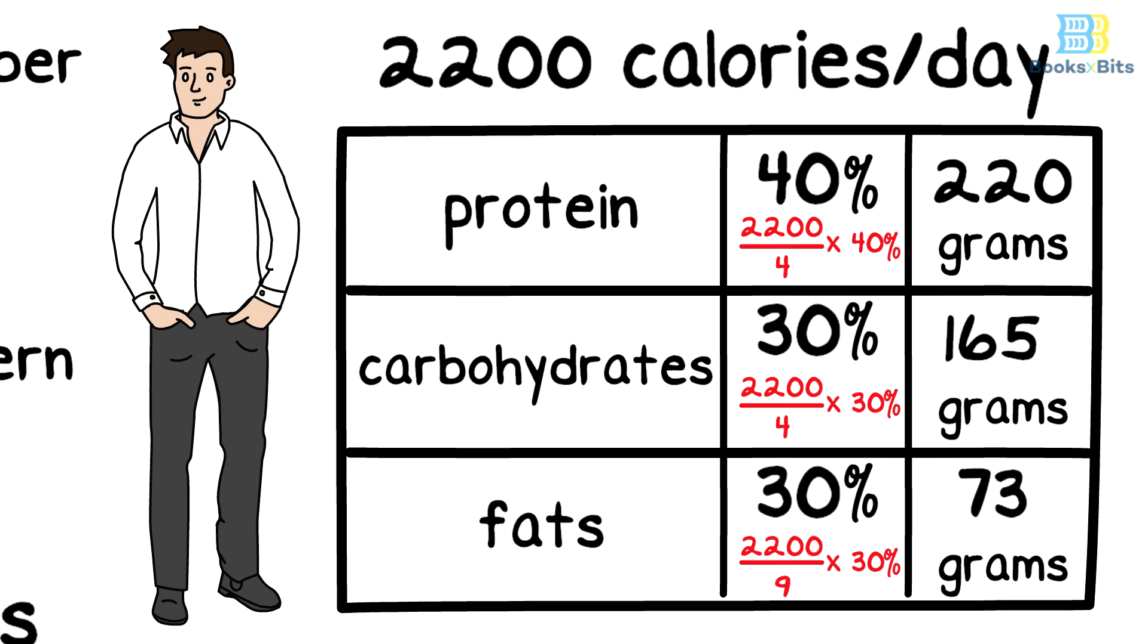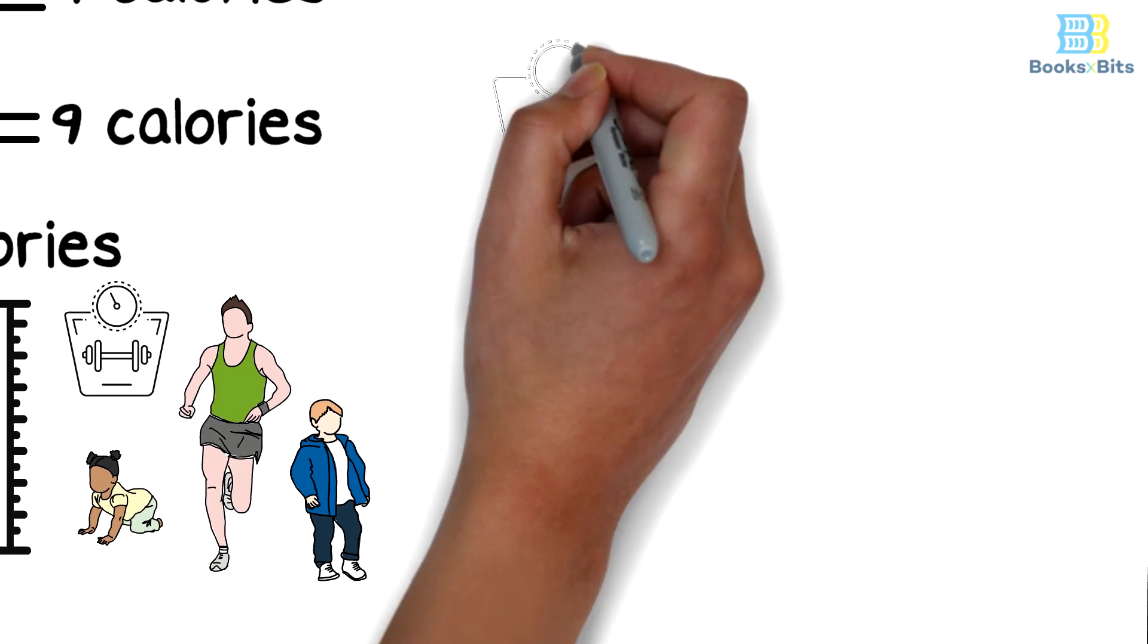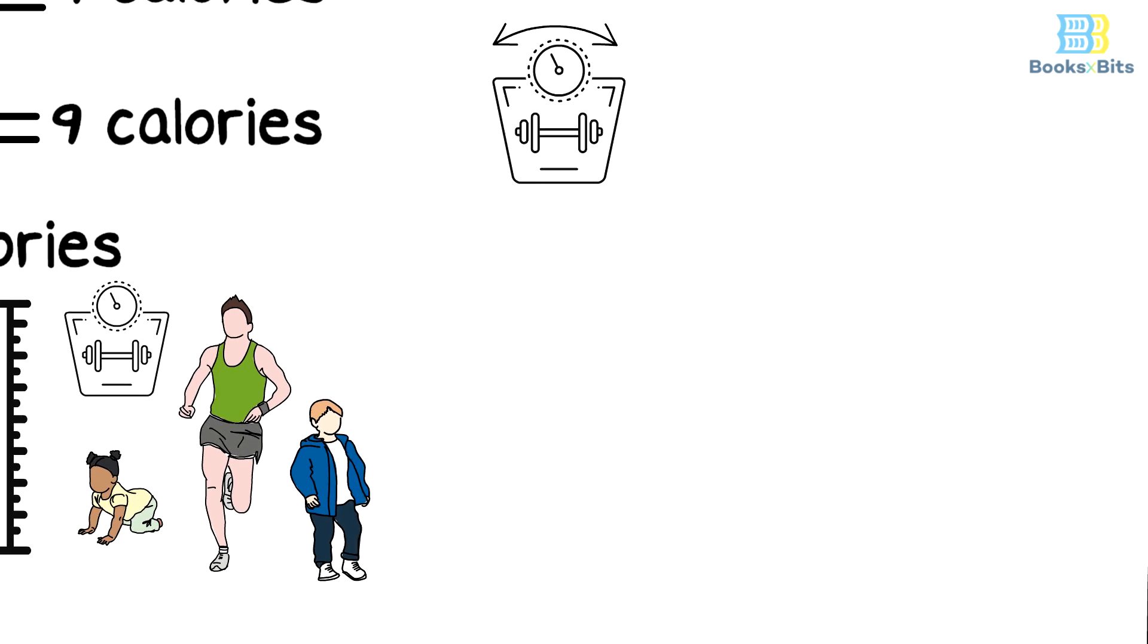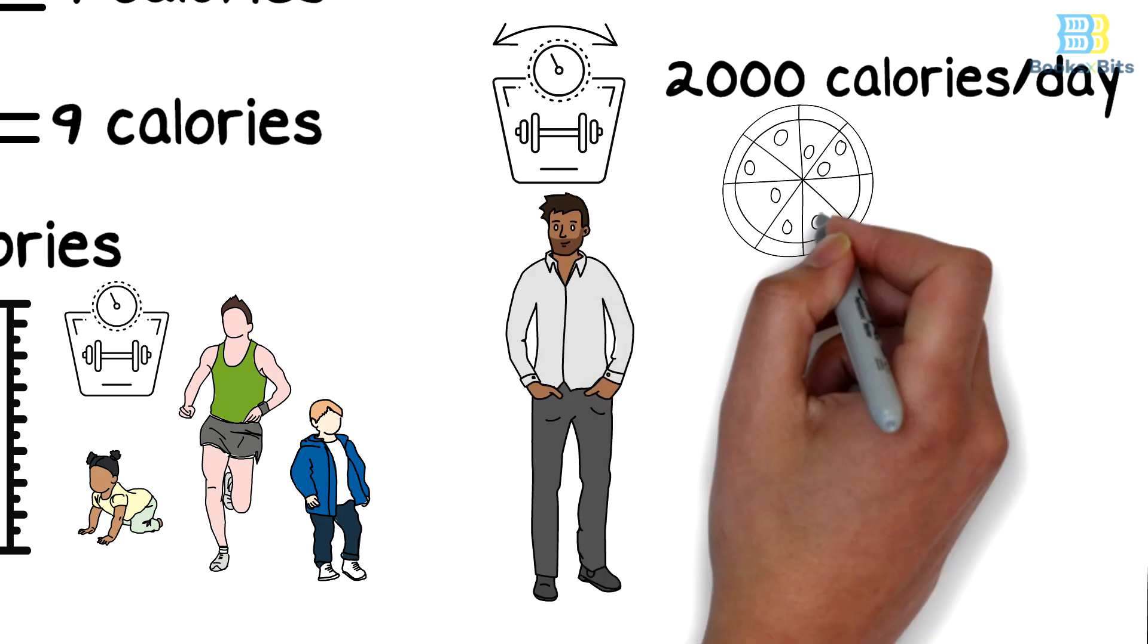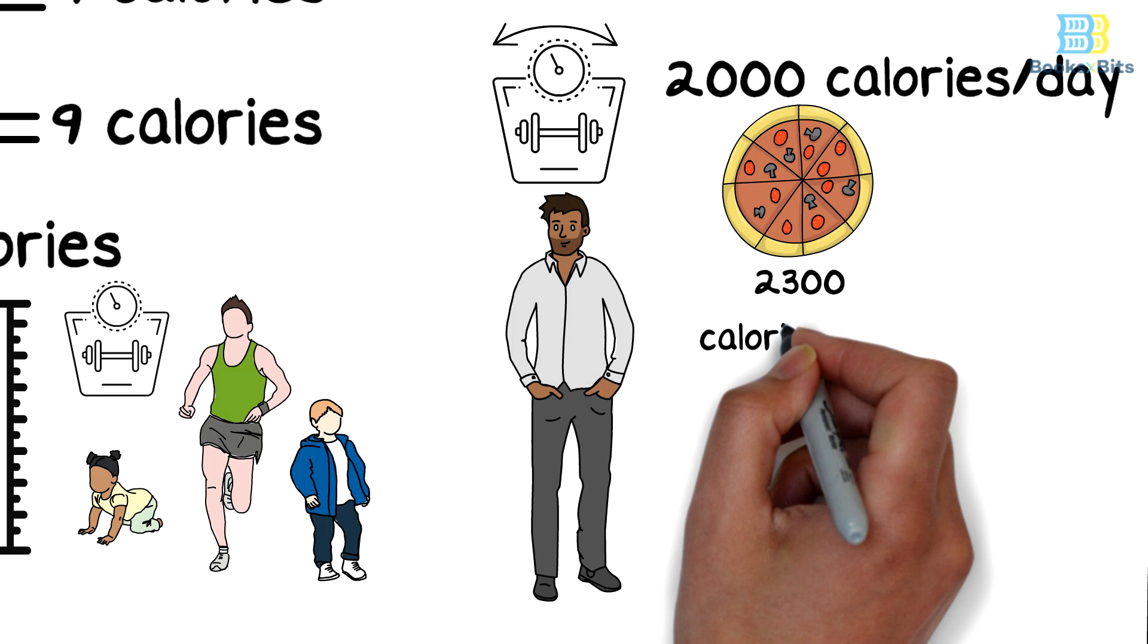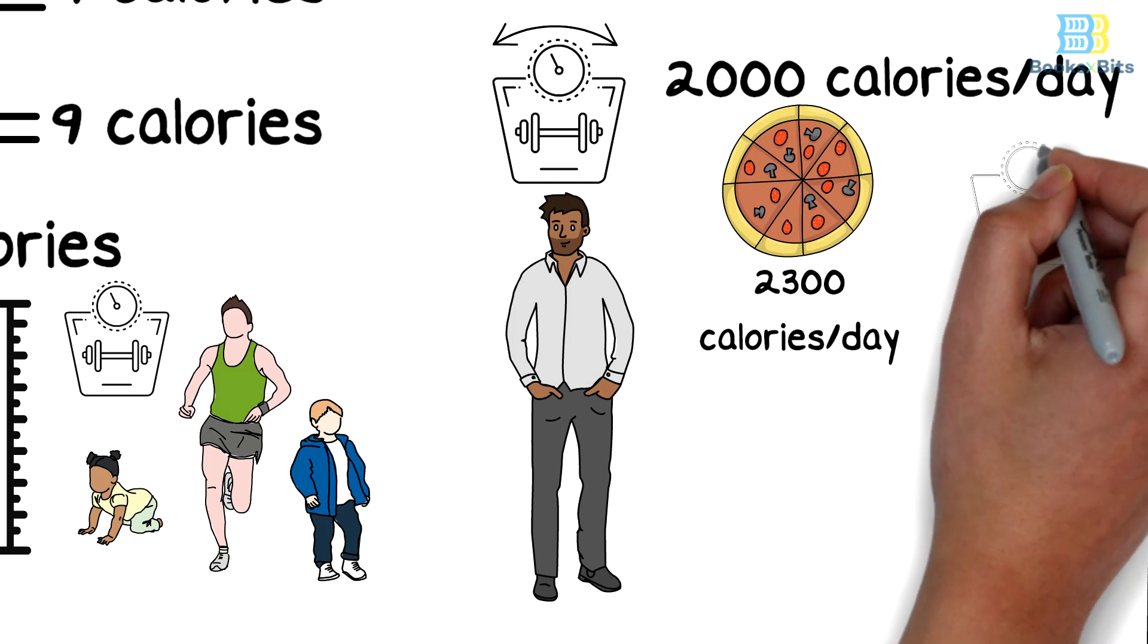For example, if we assume that a person needs 2,000 calories a day, then he eats foods that produce more than 2,000 calories per day, his weight will start to increase.